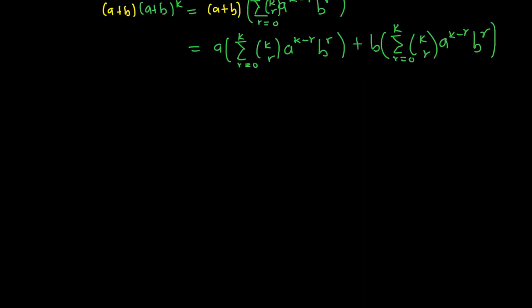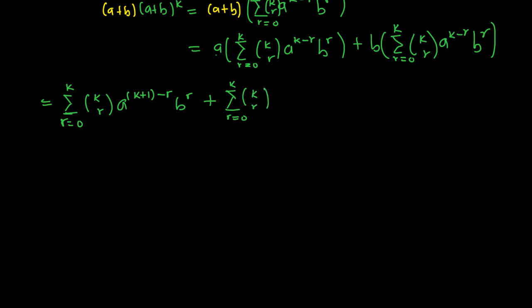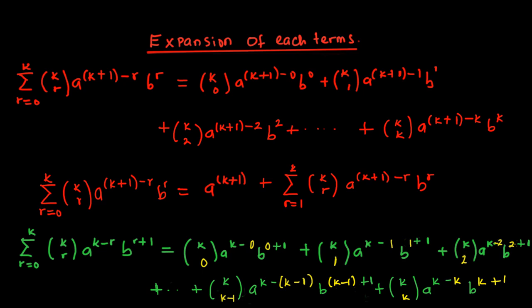Now if we simplify further — when a multiplies into the summation, by the law of indices a times a raised to power k minus r gives a raised to power k plus one minus r. So the first part becomes the summation of r from zero to k of C(k, r) times a raised to power k plus one minus r, times b raised to power r. For the second part, b multiplies through to give the summation of r from zero to k of C(k, r) times a raised to power k minus r, times b raised to power r plus one.